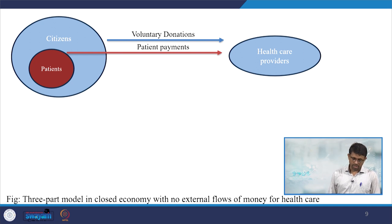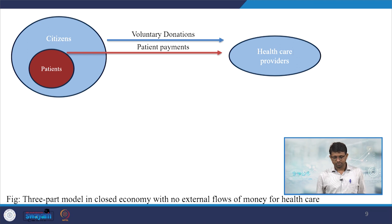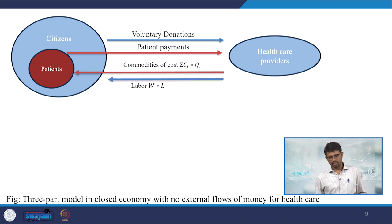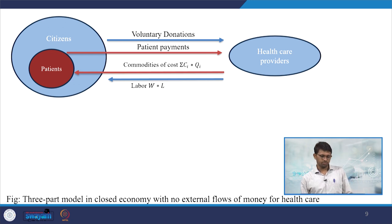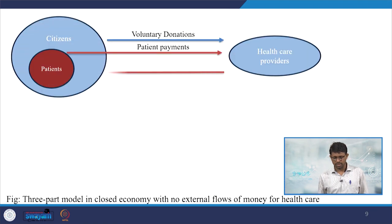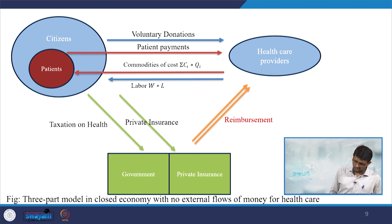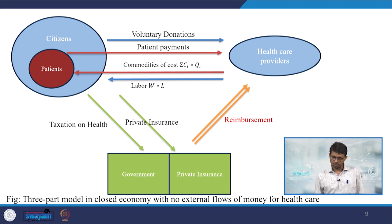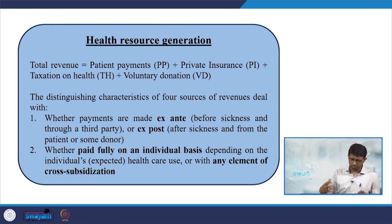To clarify: out of all citizens, a certain percentage are patients who require help from health providers. Voluntary donations and patient payments fund the commodities received. Through a third party, funds are channeled via taxation on health and private insurance, with reimbursements going to healthcare providers. These three identity components — revenue, expenditure, and income — have been explained and will be further clarified in each direction.